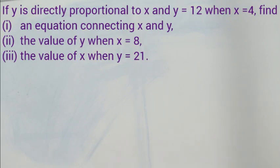Let's take a look at our first example. If y is directly proportional to x and y equals 12 when x equals 4, find: (i) an equation connecting x and y, (ii) the value of y when x equals 8, (iii) the value of x when y equals 21.